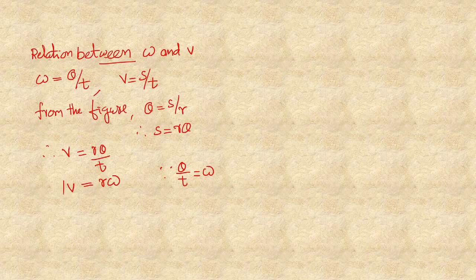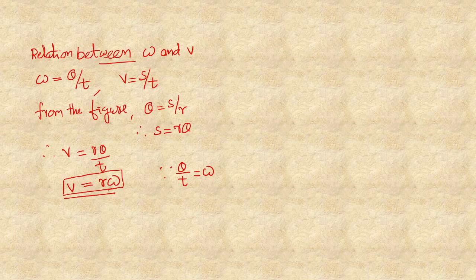This is the expression that relates the two velocities — linear velocity and angular velocity: V is equal to R times omega.